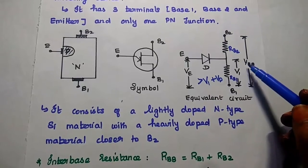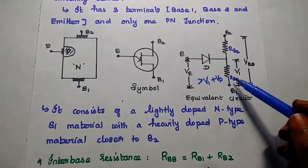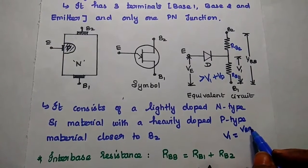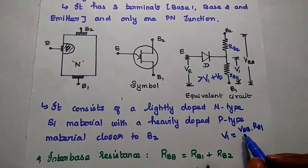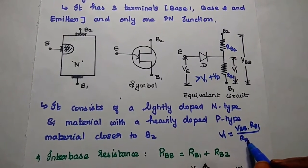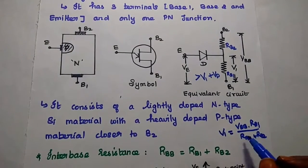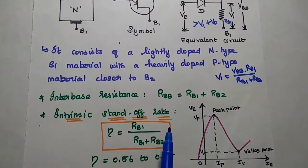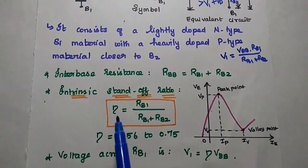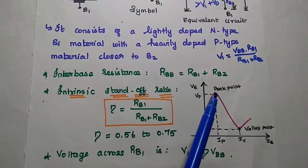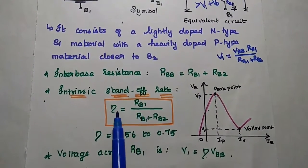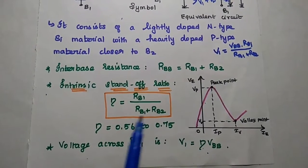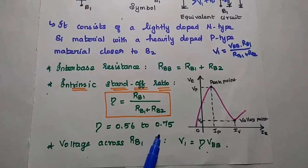V1 is equal to VBB multiplied by RB1 divided by the total resistance RB1 plus RB2. We can consider RB1 divided by RB1 plus RB2 as the intrinsic standoff ratio. The interbase resistance RBB is equal to RB1 plus RB2. The intrinsic standoff ratio eta equals RB1 by RB1 plus RB2. From this, V1 equals eta into VBB. The eta value is always between 0.56 to 0.75.